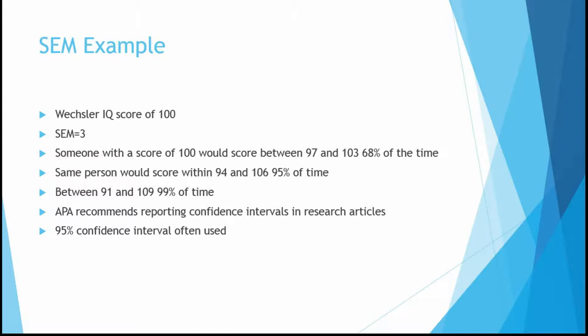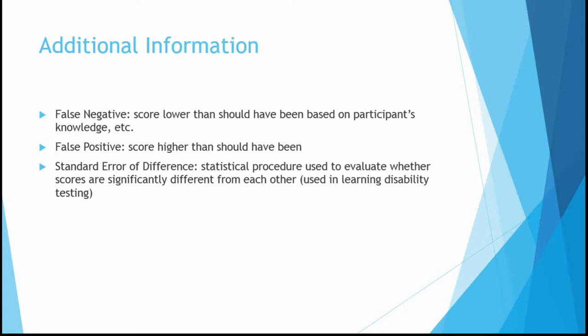The textbook also has a good discussion of this, so if you get stuck, please look at that again. A couple of additional concepts: false negatives occur when somebody gets a score lower than it should have been based on their knowledge or characteristics, and false positives are the opposite — when they score higher than they should have. We all sort of want false positives, but unfortunately for a lot of us they don't come our way very often.